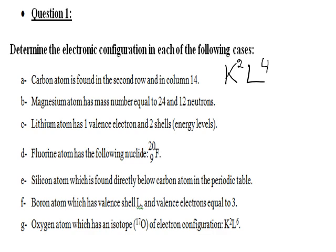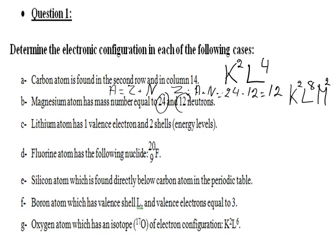Lithium has one valence electron and two energy levels, so the configuration is K2 L1. The atom with the given nucleus (mass number and atomic number shown) has configuration K2 L7. Silicon is directly below carbon in the periodic table — same group, one more energy shell. So it has configuration K2 L8 M4.